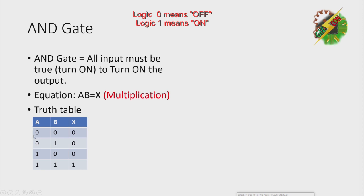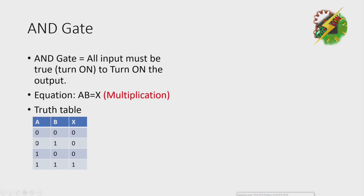As you can see here, we have A which is equivalent to 0 (or off), B at 0 (or off), and an output of 0. As stated, all inputs must be turned on so that the output will turn on. That's why in the truth table, both A and B must be turned on to make X turn on. We have 0 and 1 with output 0; we have 1 and 0 with output 0; and lastly, we have 1, 1, and the output is 1.